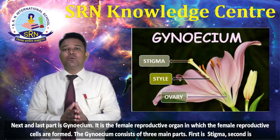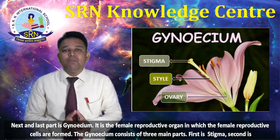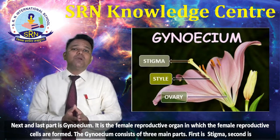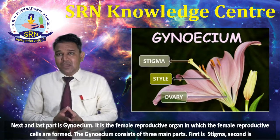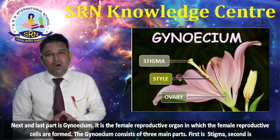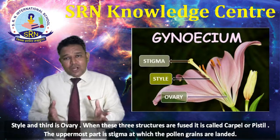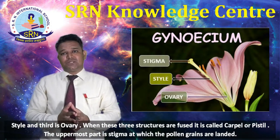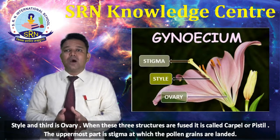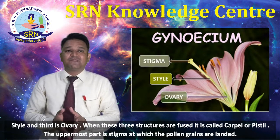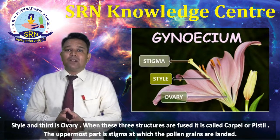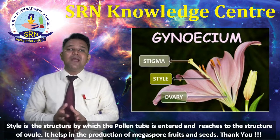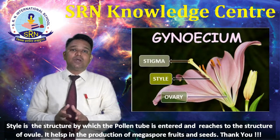The next and last part is the gynoecium. It is the female reproductive organ in which the female reproductive cells are formed. The gynoecium consists of three main parts: first is the stigma, second is the style, and third is the ovary. When these three structures are fused together, it is called a carpel or pistil.